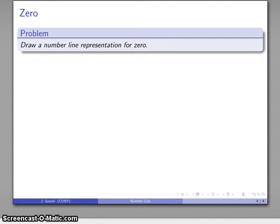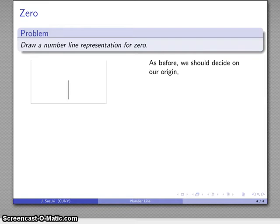Well, let's take a different example. Let's draw a number line representation for the number zero. So as before, we want to decide on where our origin is going to be, so I'll throw down a mark there, figure out what our units look like, so there's my unit. And now I want to form a set with the desired cardinality.